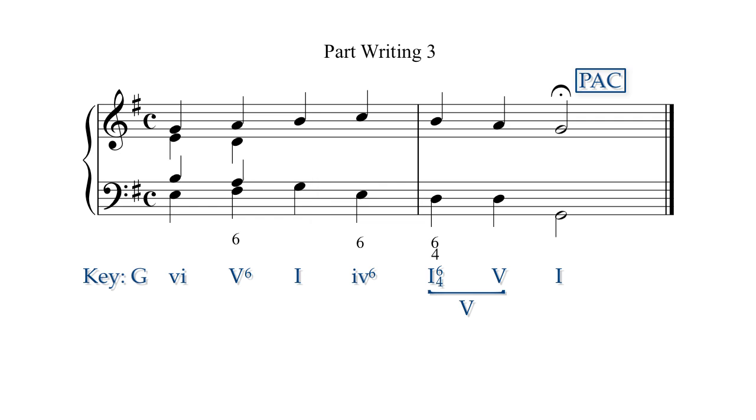In the following tonic triad, the bass has the root and the soprano has the third. We need a fifth, D, and another root. The alto is already singing a D and can stay there. The tenor will continue its downward stepwise movement to double the root at the unison.